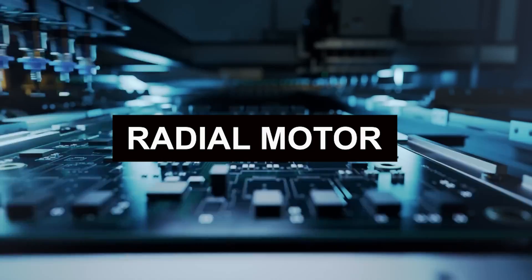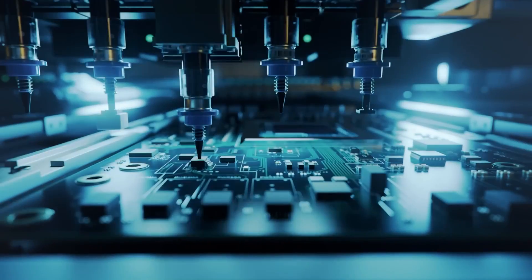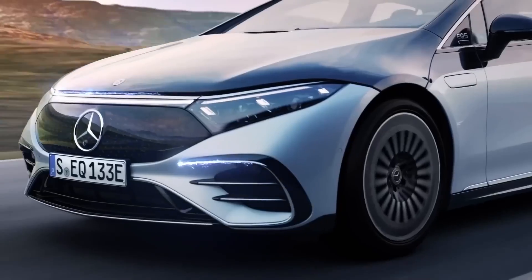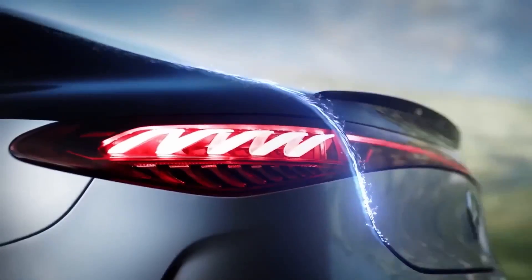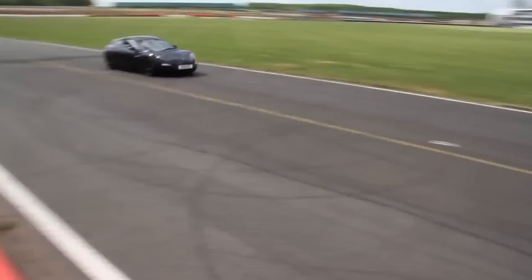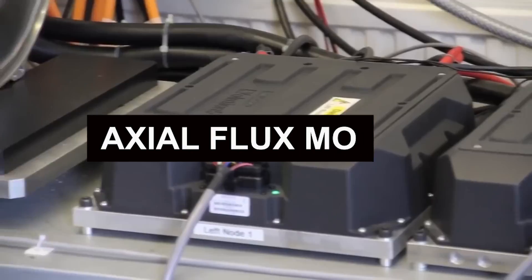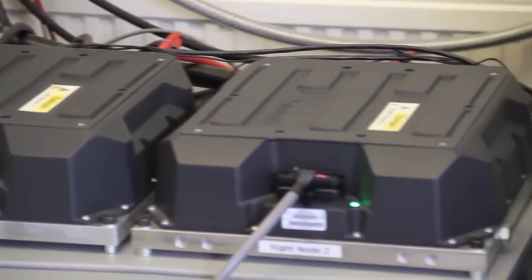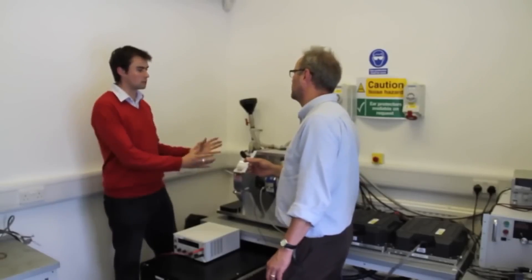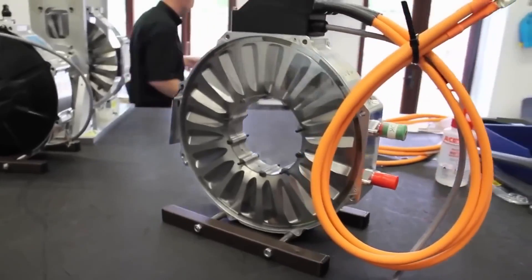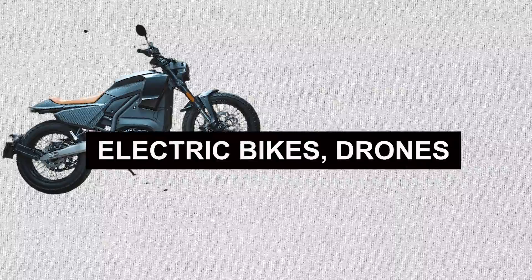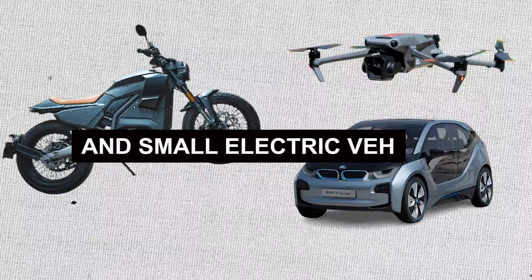Applications. Radial motor: Radial motors are commonly used in various applications, including electric vehicles, robotics, and industrial machinery. Axial flux motor: Axial flux motors are suitable for applications where a compact design is essential, such as electric bikes, drones, and small electric vehicles.